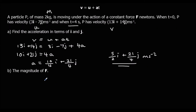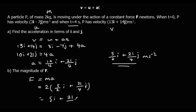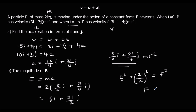Find the magnitude of f, so f equals ma. m is 2, a is 5 over 2 i plus 21 over 4 j. So expanding the bracket gives us 5i plus 21 over 2 j. We want the magnitude, so we're going to use Pythagoras: 5 squared plus 21 over 2 squared equals f squared. Using a calculator, we square root the answer, so f equals root 541 over 2, or to 3 significant figures, that's 11.6 newtons.